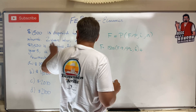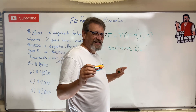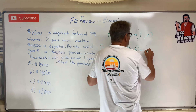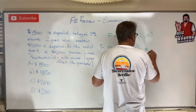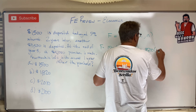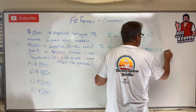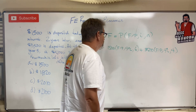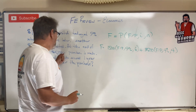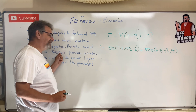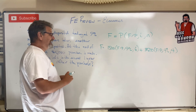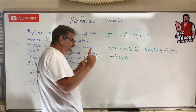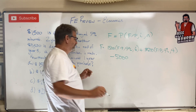The next deposit was $3,500, but it only sat in the bank for four years — two years later, right? So this is $3,500 times F given P, 9% for four years. But I spent $5,000 a year ago, so I need to deduct $5,000 from that future amount with one year's worth of interest.